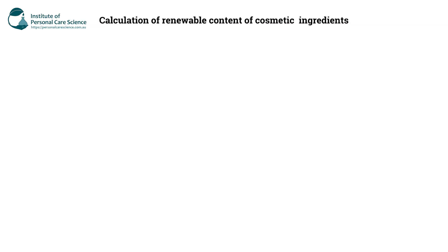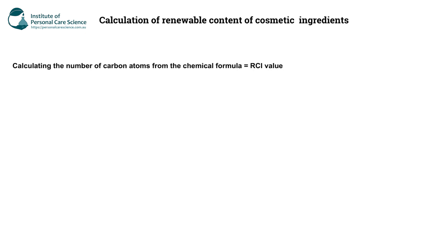Now, to work out the natural percentage of a material like Genogen CAB — which is naturally derived with a synthetic portion — you need to calculate the number of carbon atoms from the chemical formula itself, which allows you to obtain an RCI value, which is a Renewable Carbon Index.